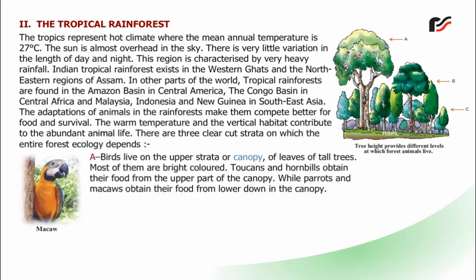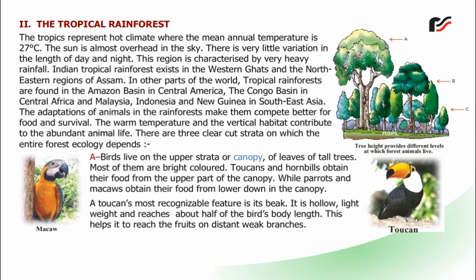Birds live on the upper strata or canopy of leaves of tall trees, and most of them are bright-coloured. Toucans and hornbills obtain their food from the upper part of the canopy, while parrots and macaws obtain their food from lower down in the canopy. A toucan's most recognizable feature is its beak — it is hollow, lightweight, and reaches about half of the bird's body length, helping it reach fruits on distant, weak branches.